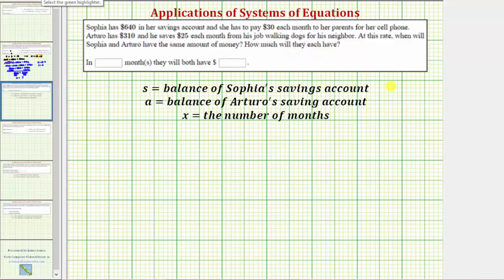Let's first define the variables to represent the unknowns. Let S equal the balance of Sophia's savings account. Let A equal the balance of Arturo's savings account. And then finally we'll let x equal the number of months.